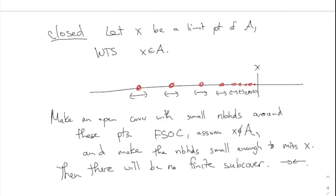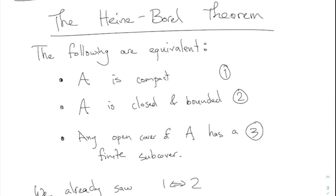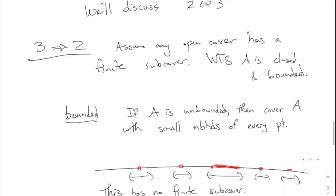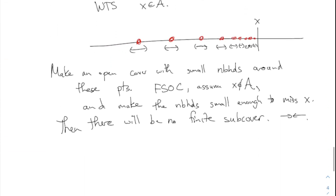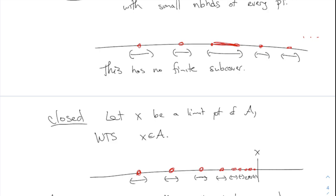This contradicts our assumption that there would always be a finite subcover. This is why X needs to be part of the set. I've discussed only part of the Heine-Borel theorem — three implies two. The other direction, two implies three, uses similar reasoning but I don't want to spend all day on these proofs; it's in the book if you want to check it out. Both pictures should give you an idea of the connection between boundedness and closedness and open covers with finite subcovers.